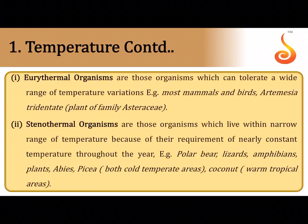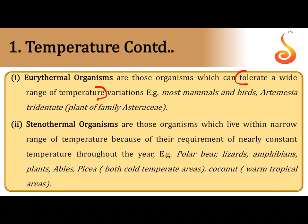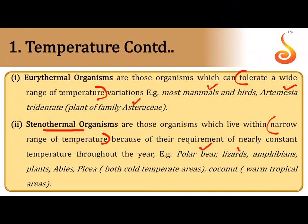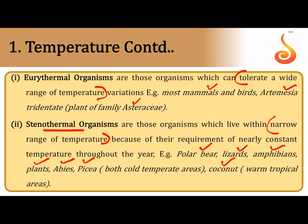An organism that can tolerate a wide range of temperature is called eurythermal — 'eury' refers to wide range and 'thermal' refers to temperature. Most mammals and birds are eurythermal. Organisms that can tolerate only a very narrow range of temperature are called stenothermal organisms. If temperature fluctuates beyond that narrow range, they cannot lead a normal life. Examples include polar bears, lizards, amphibians, and some plants like coconut.